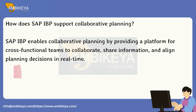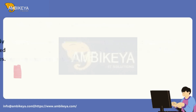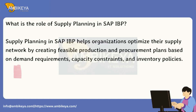How does SAP IBP support collaborative planning? SAP IBP enables collaborative planning by providing a platform for cross-functional teams to collaborate, share information, and align planning decisions in real-time. Supply planning in SAP IBP helps organizations optimize their supply network by creating feasible production and procurement plans based on demand requirements, capacity constraints, and inventory policies.